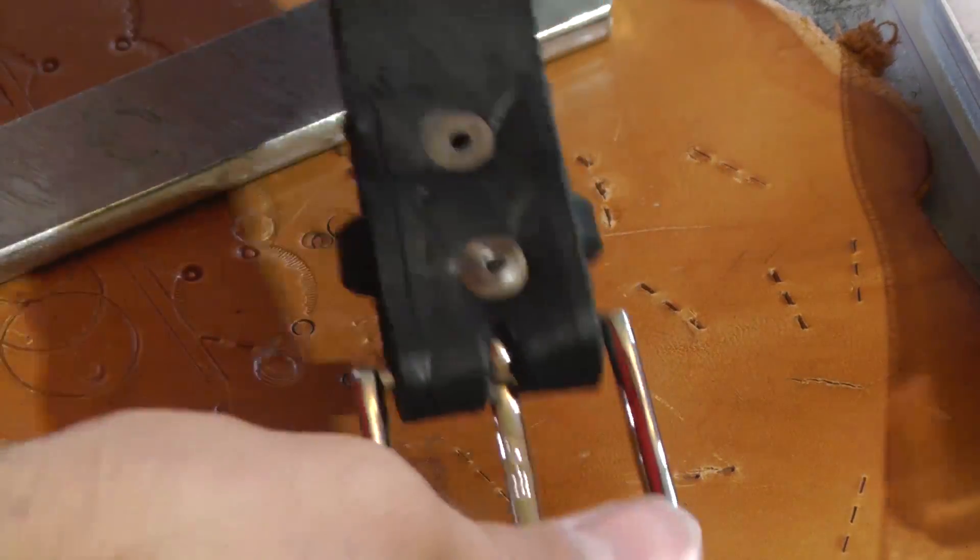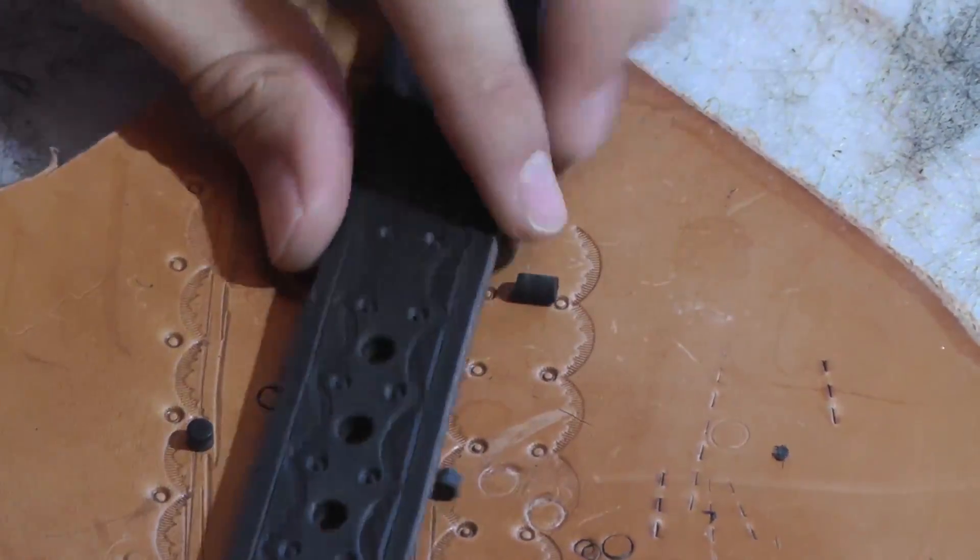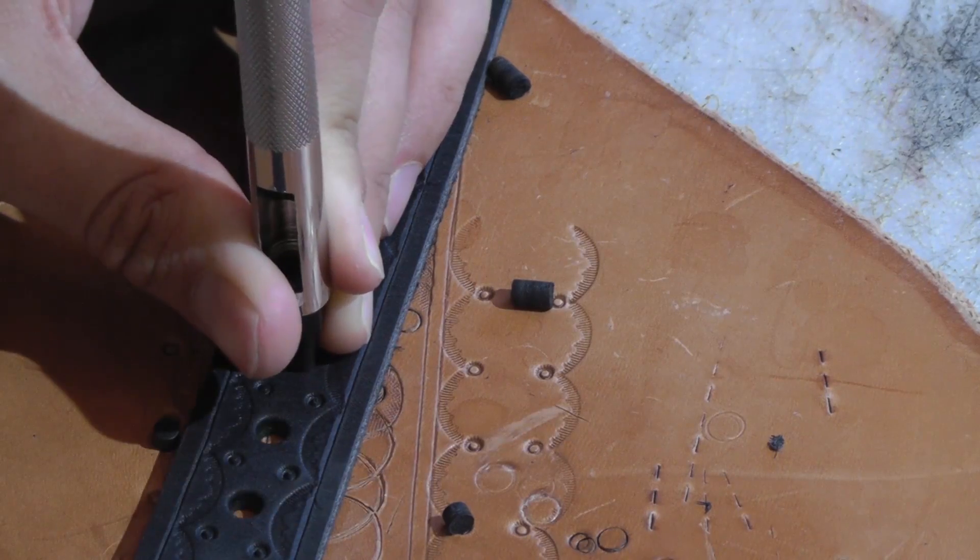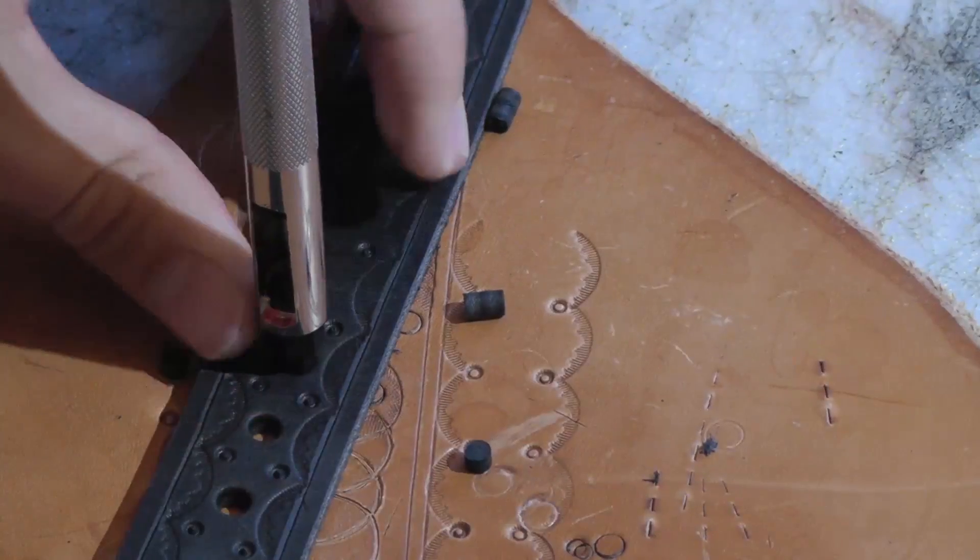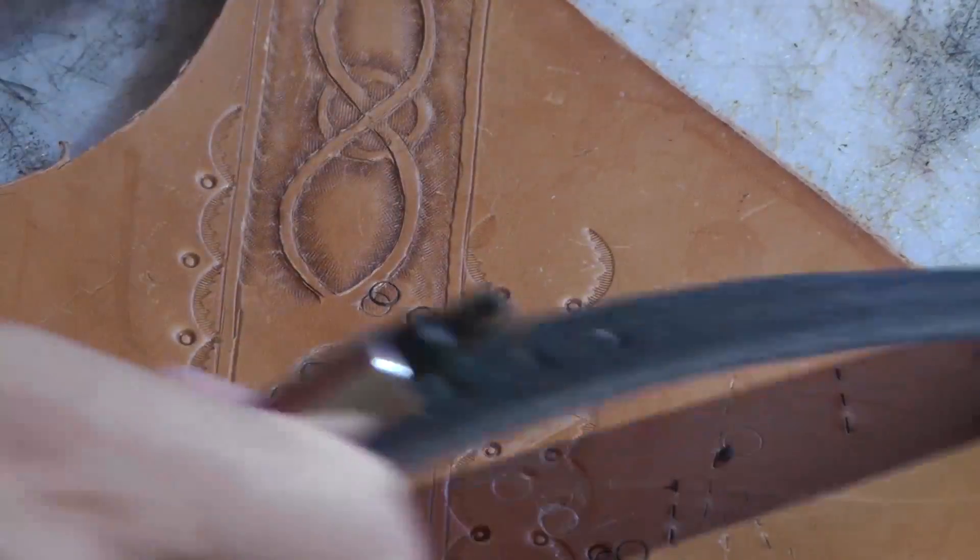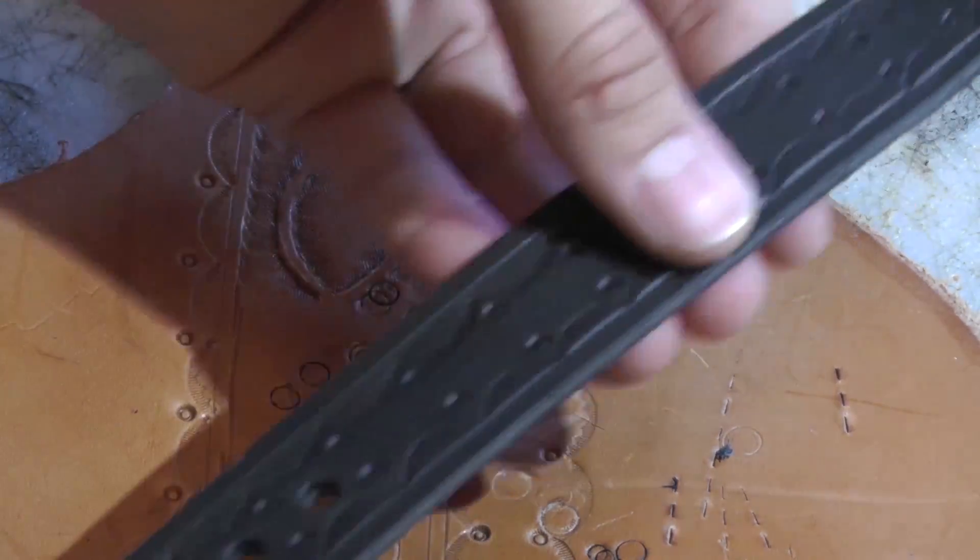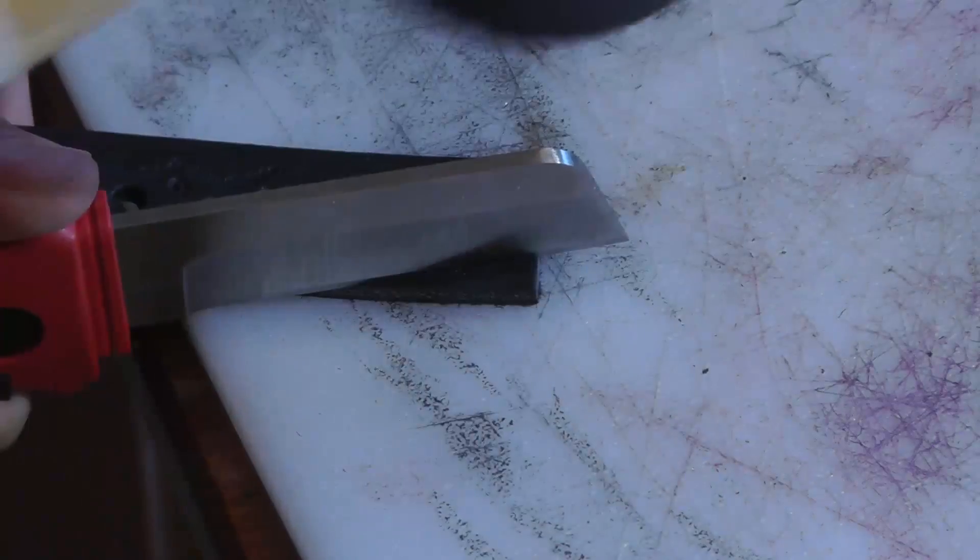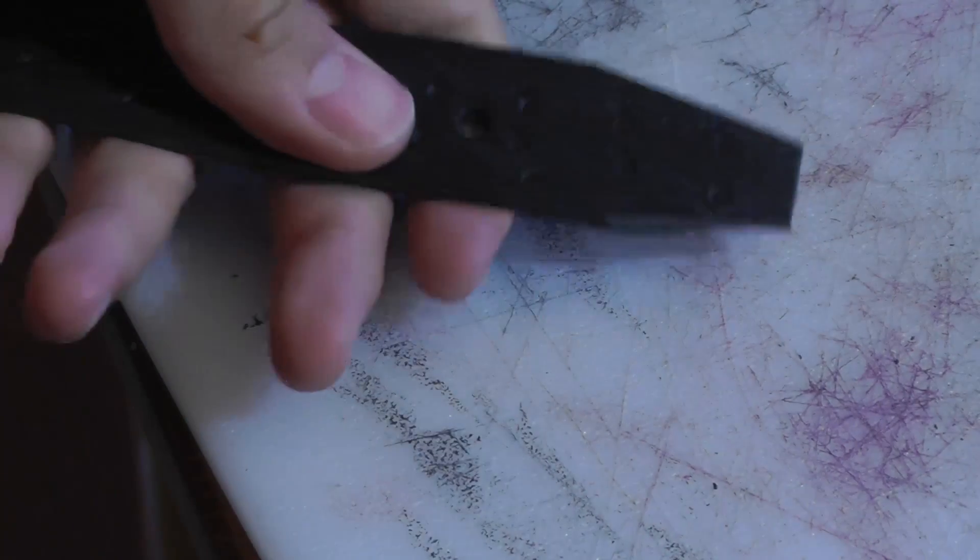So now we have the rivets installed. Loop installed. Everything is installed. And one more. Last step now is to finish off this end here. We don't need the extra five or six inches here. So instead I'm going to make the cut. There we have it. A nice end. A nice belt.